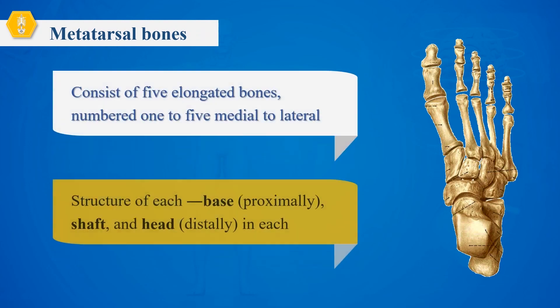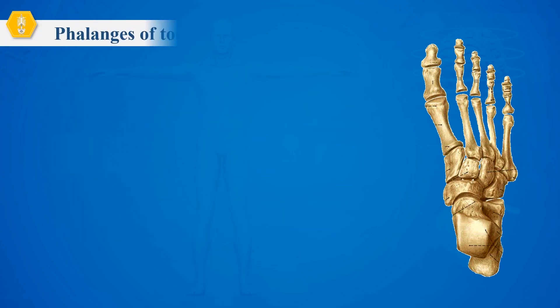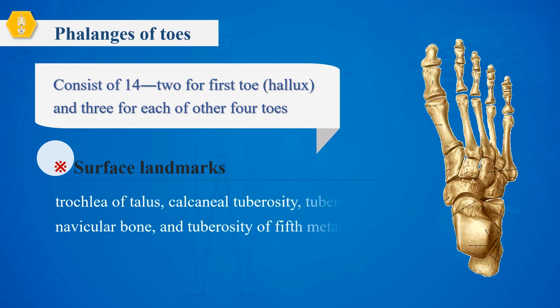Metatarsal bones. There are five metatarsals with the posterior end as the base, the middle as the body, and the anterior end as the head. Phalanges of toes. There are a total of 14 phalanges, and the name and structure of each phalanx are the same as those of the finger bones.